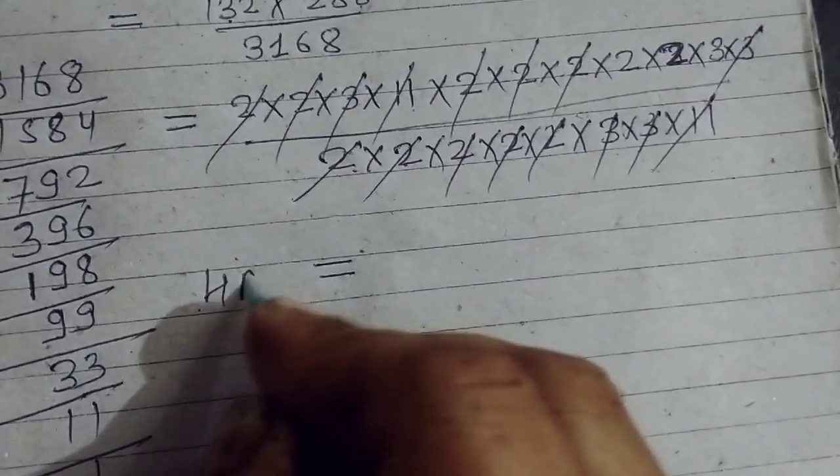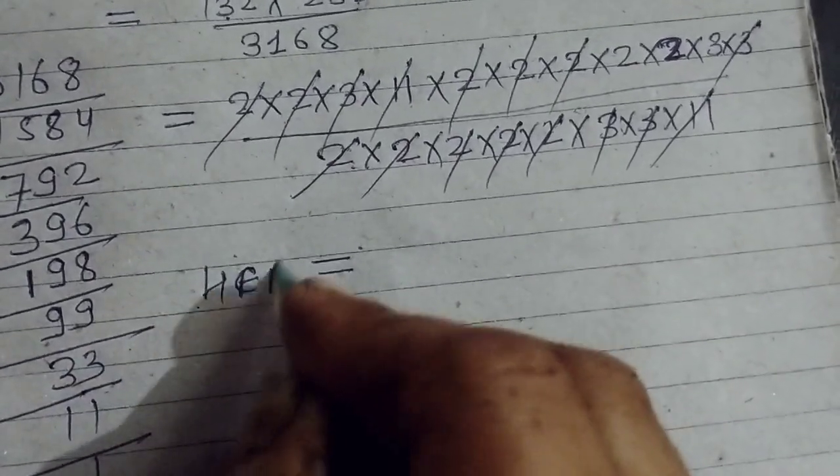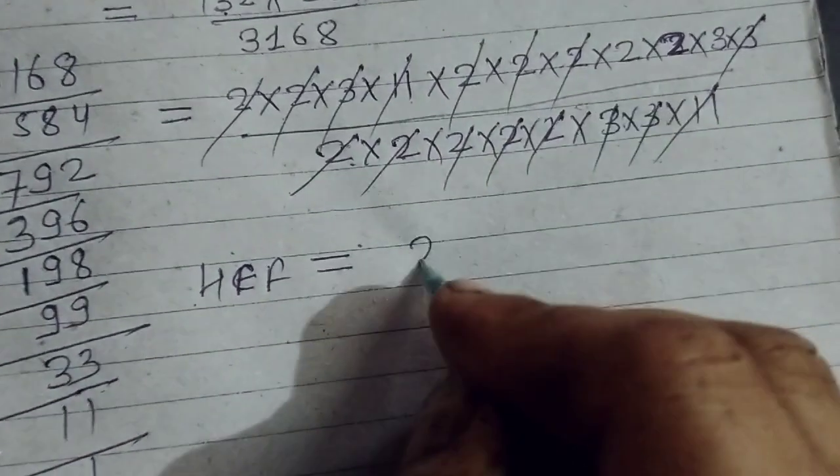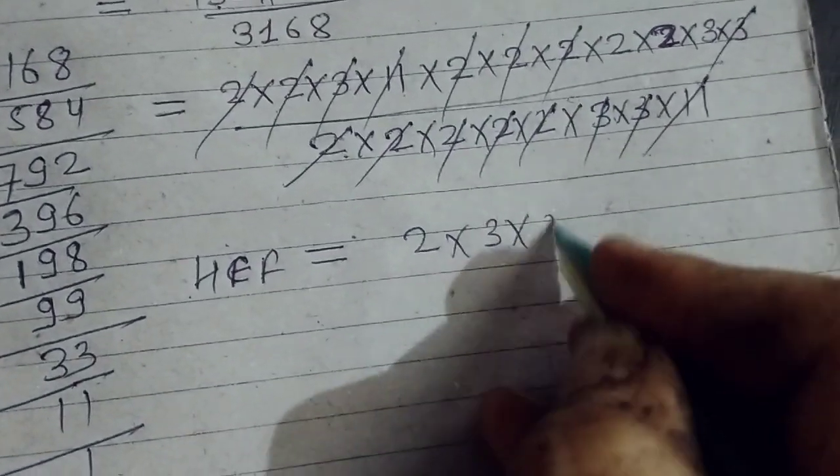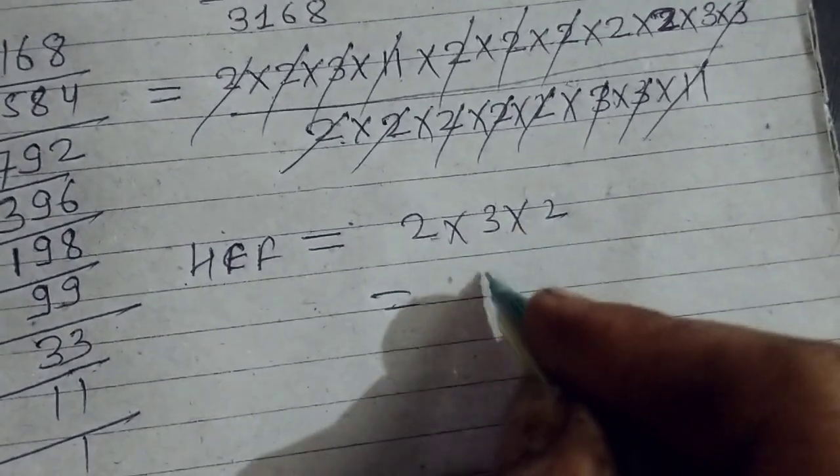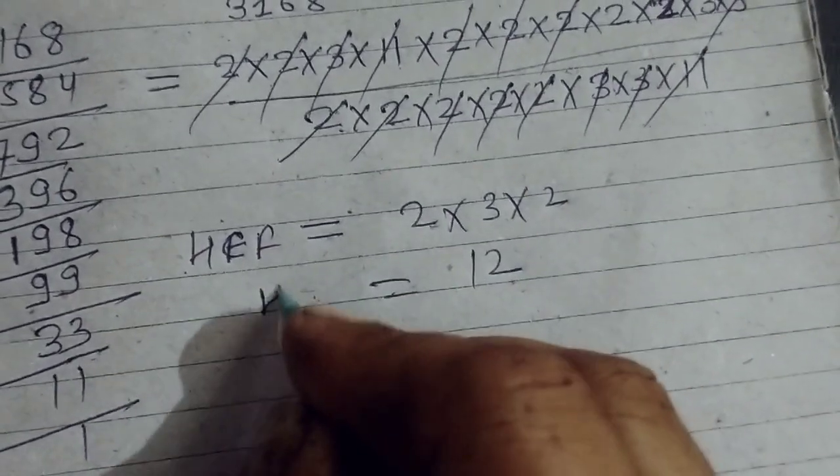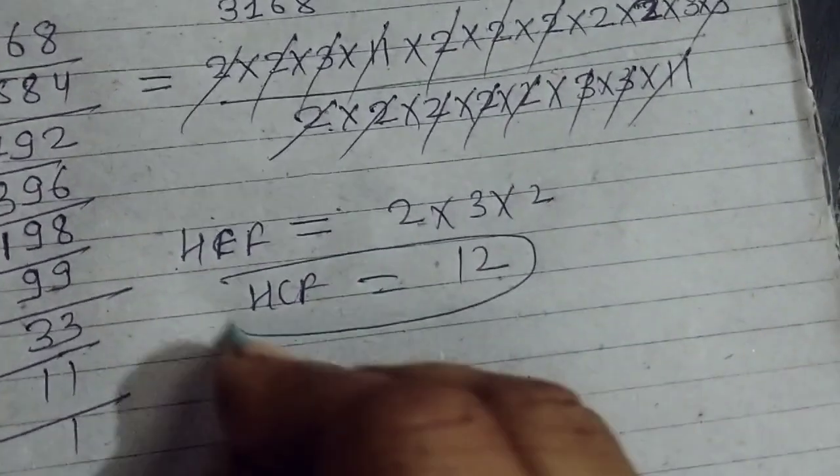The remaining number is the HCF, which is 2 times 3 times 2. 2 times 3 is 6, 6 times 2 is 12. So HCF is 12 for these numbers.